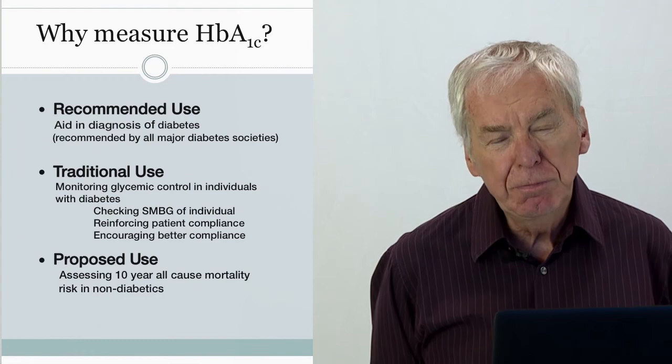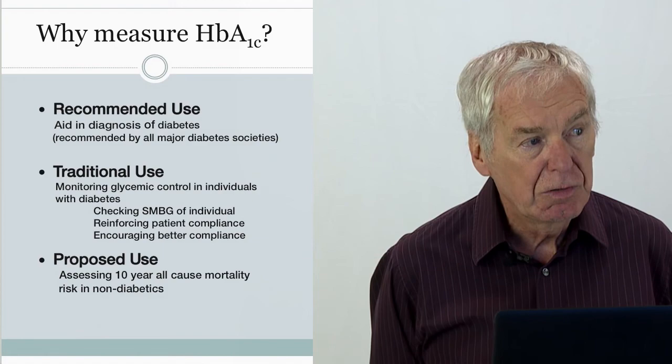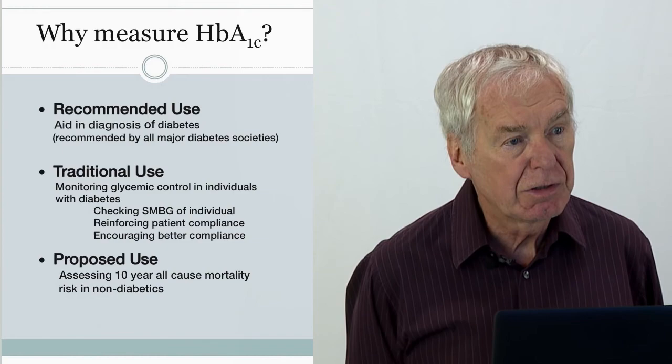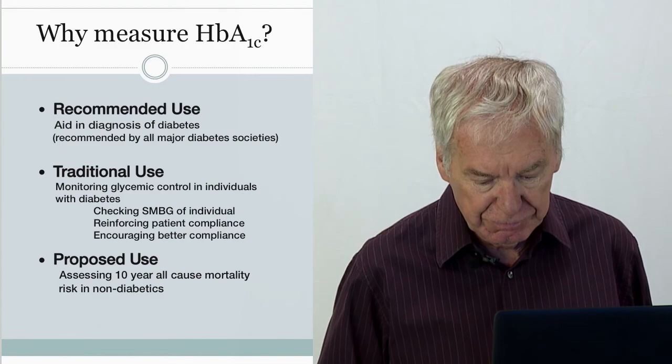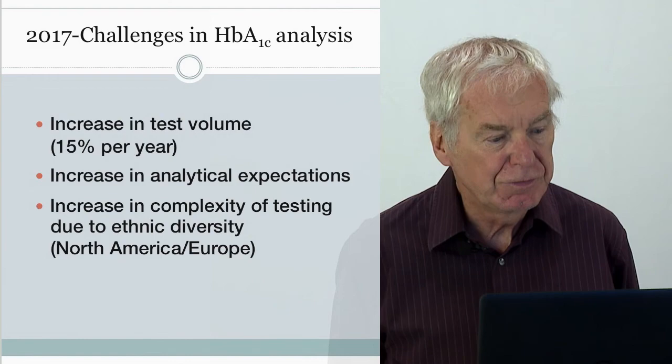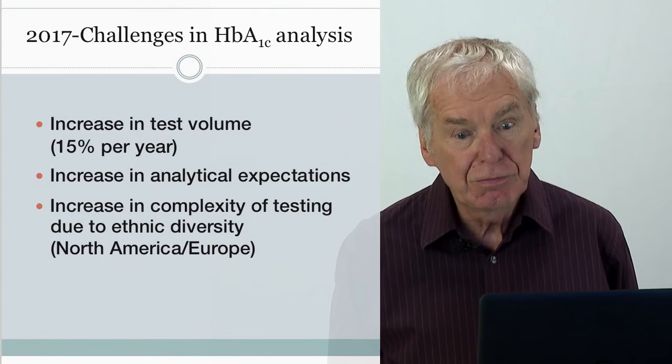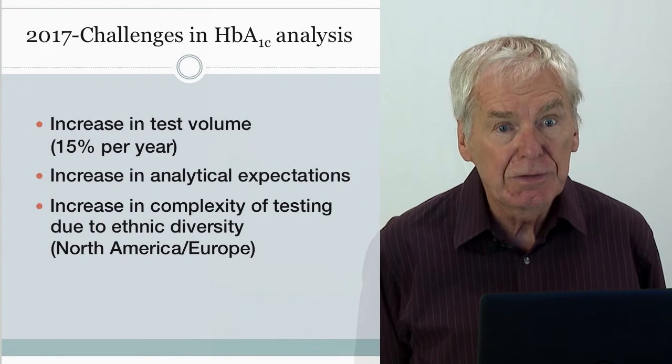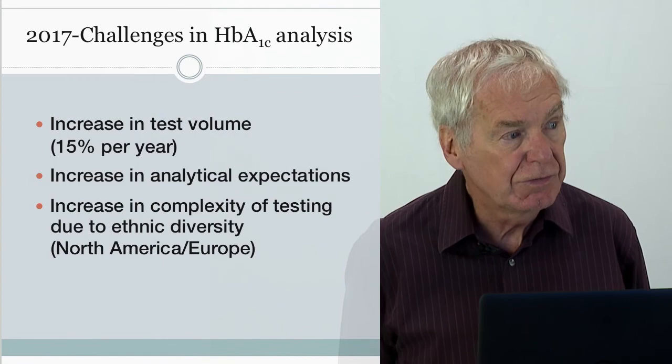There is also a new proposed use: hemoglobin A1c as a risk marker for mortality in non-diabetics. But that use is controversial and we're not going to discuss it here. This large increase in the use of hemoglobin A1c for diagnosis and monitoring has led to challenges for both the laboratory and manufacturers.